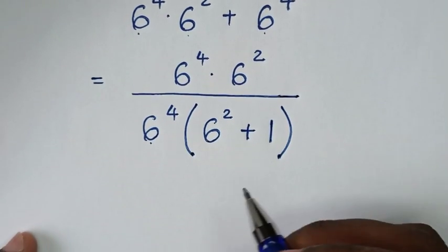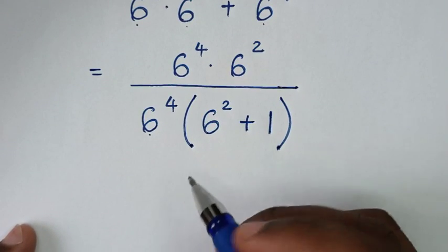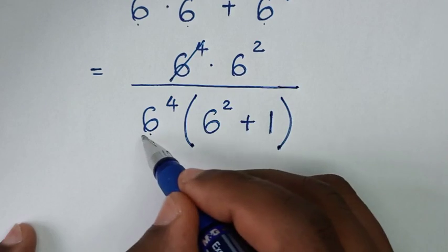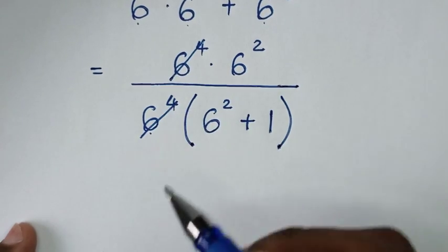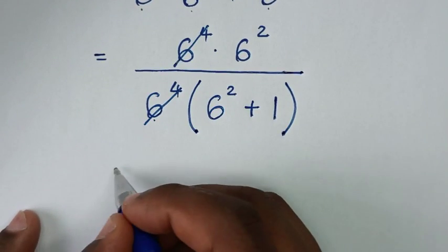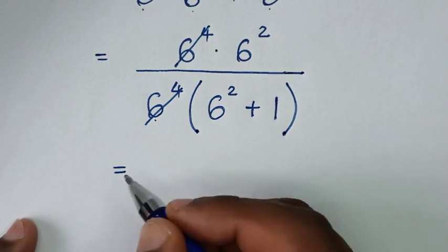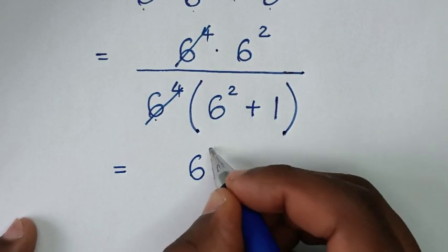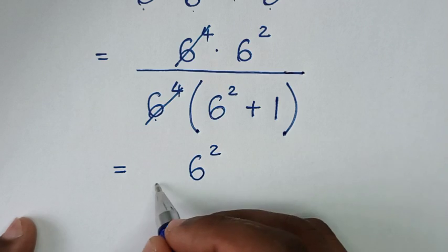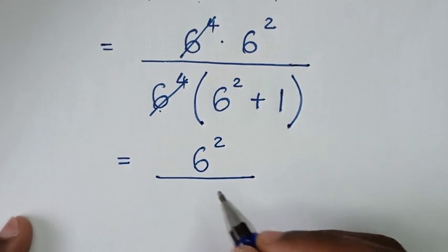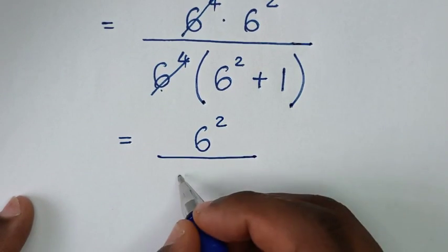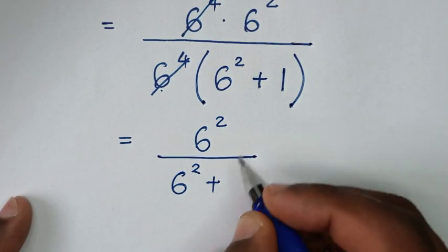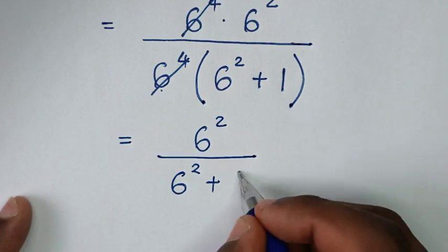In the next step we simplify: this 6 power 4 will cancel this 6 power 4. So it will be equal to 6 power 4 over 6 power 2, then plus 1.